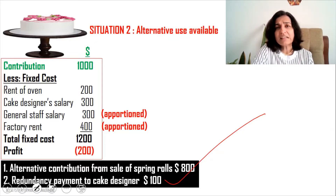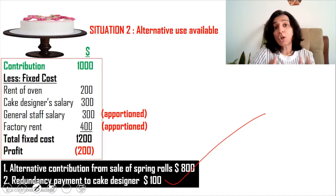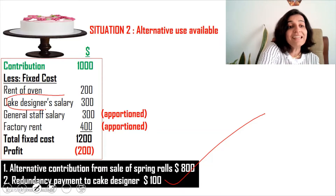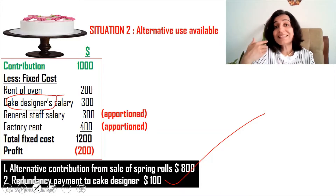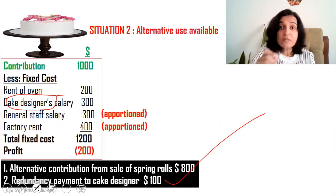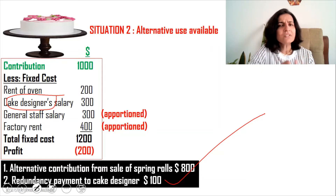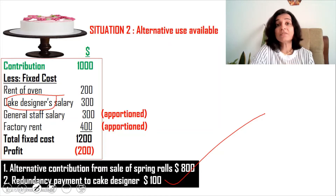Redundancy payments are those payments made to employees who are terminated or no longer required. If we close down the cake division, the cake designer will be terminated, so we must pay redundancy. This makes the redundancy payment a cost arising directly from our decision to close the division. The question is how to decide whether it is better to shut down the cake division or not.